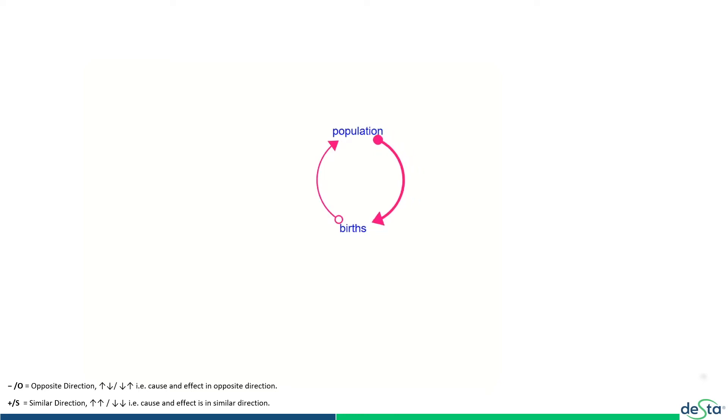And as the population increases it leads to more births taking place over time. Hence, there is a feedback loop here. There is a two-way relationship, there is a causality. And to express the nature of this causality in systems thinking, we use something called polarity. Because population is impacting births in a positive manner, we put a plus sign there.